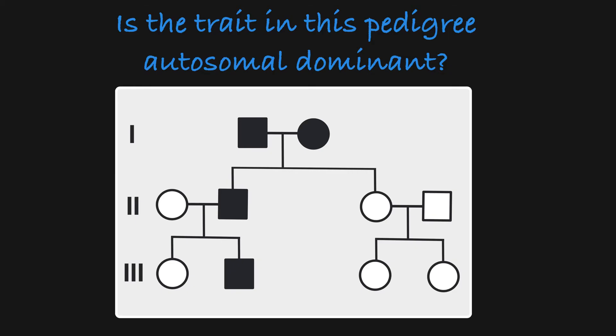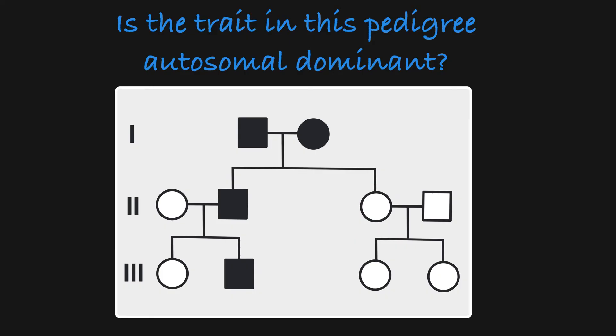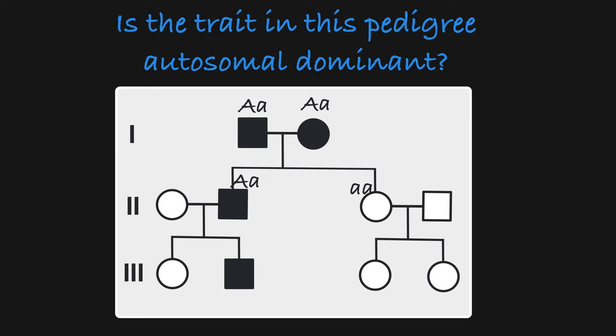With these two rules in mind, let's take a look at some practice pedigrees to see if we can tell if the trait is inherited in an autosomal dominant manner. When we look at this pedigree, we see two affected parents having one affected and one unaffected child. This checks out in an autosomal dominant mode of inheritance because these parents could be heterozygous, producing one child that is homozygous recessive and one that has at least one dominant allele.